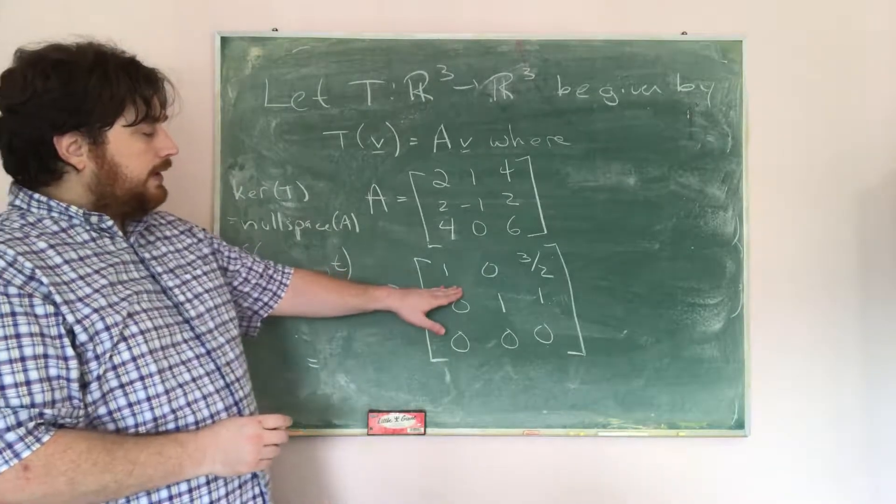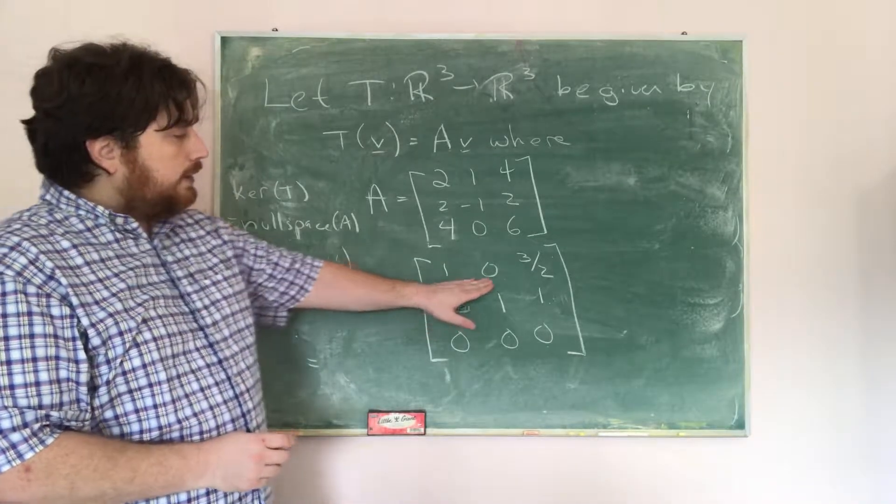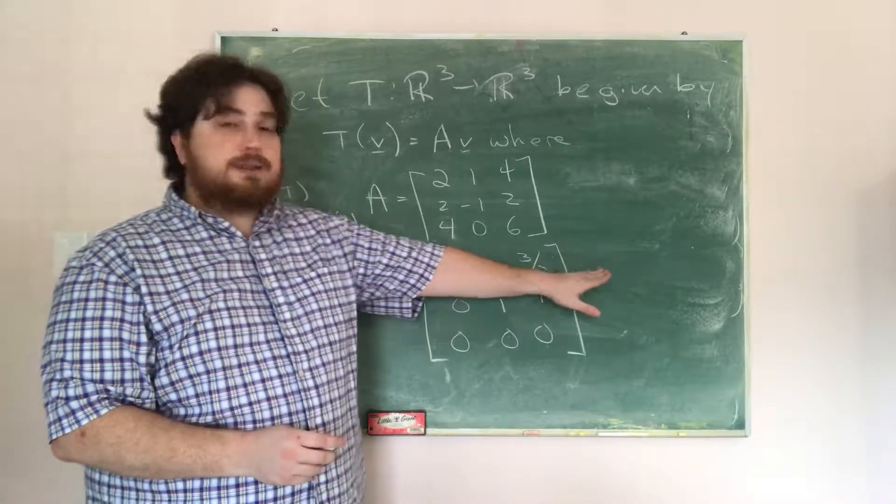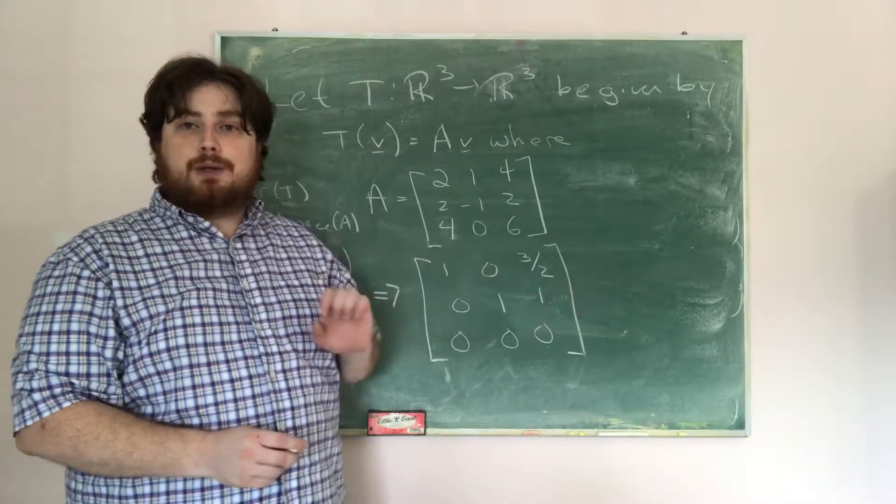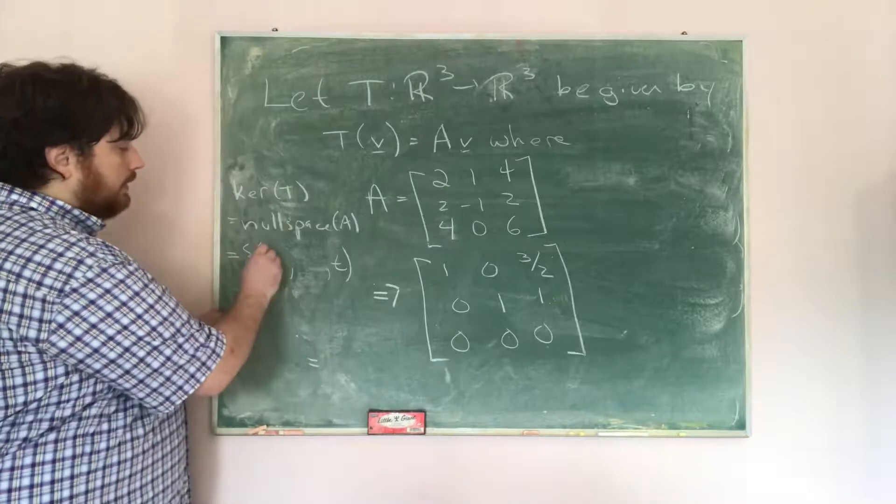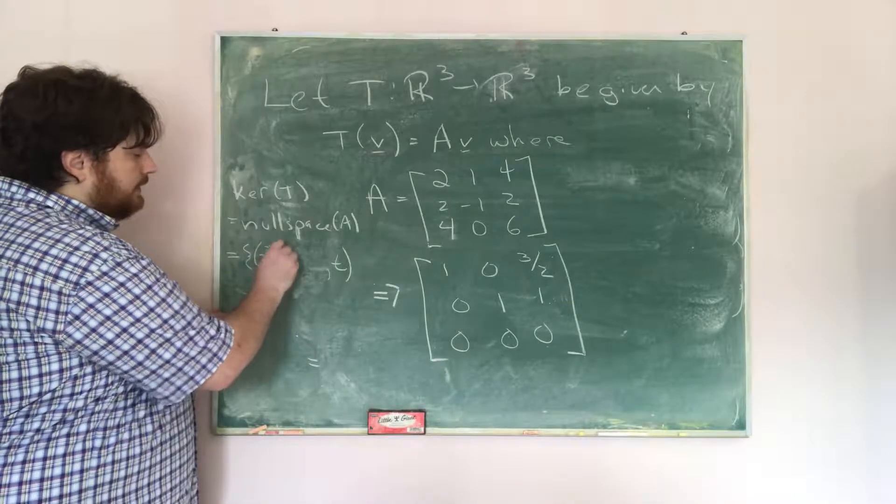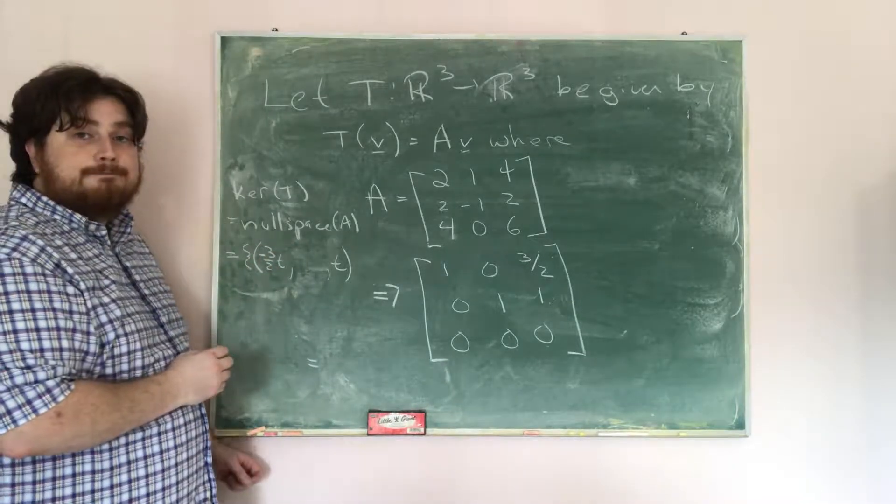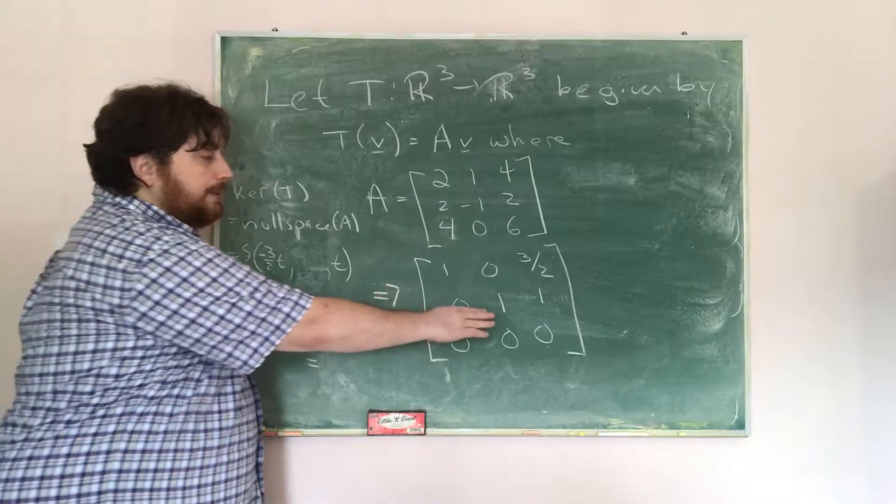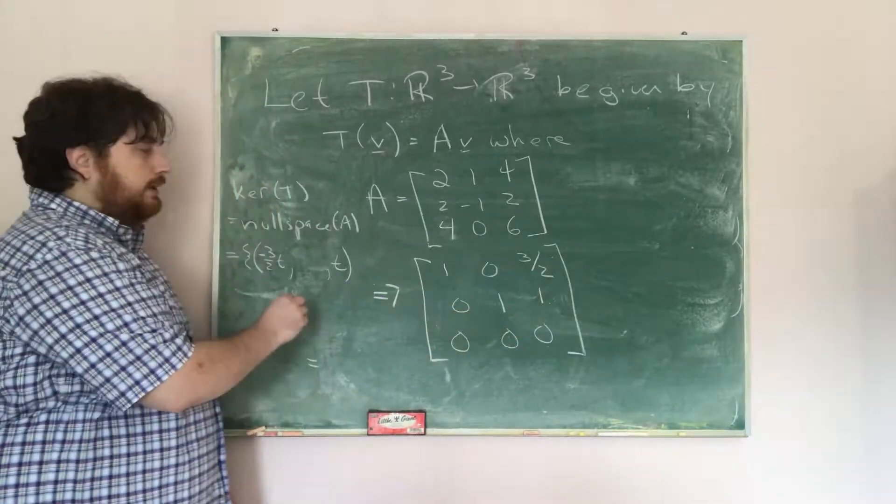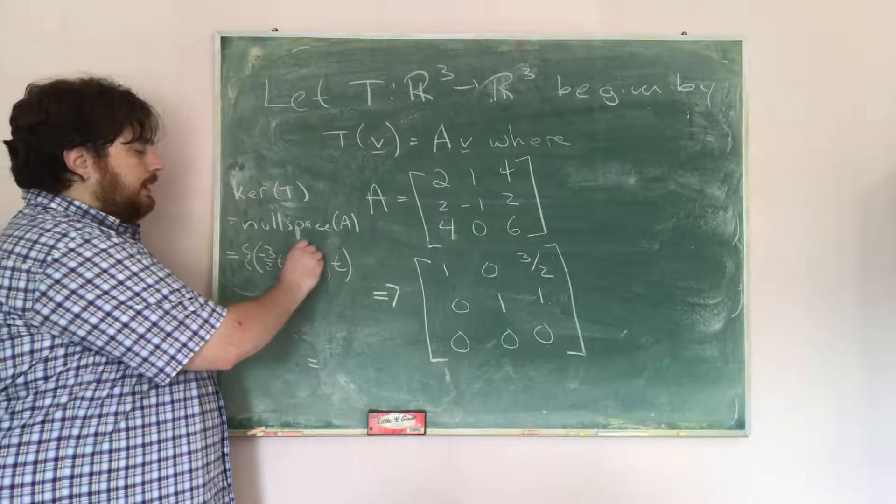Now, if we look at this one, this says that x1 plus 3 halves x3 is equal to 0. So that is x1 is negative 3 halves x3, or negative 3 halves T is equal to x1. We follow that process, we get x2 is negative x3. So that is x2 has to be negative T.